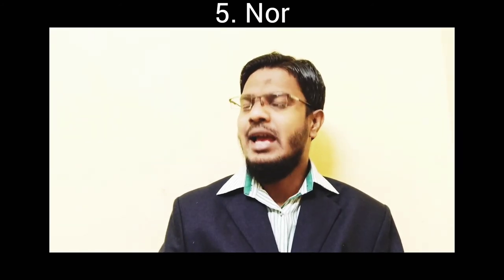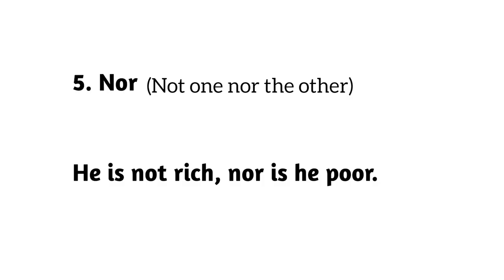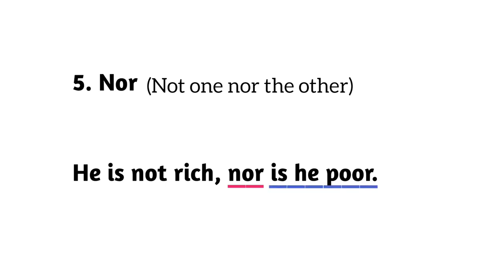Number five: 'nor.' Nor is used when the first simple sentence is in the negative and you want to combine it with another simple sentence. After 'nor,' place the helping verb before the subject. Example: 'He is not rich nor is he poor.' Note that after 'nor,' the helping verb 'is' comes before the subject 'he.'